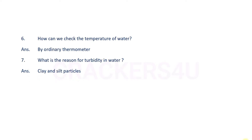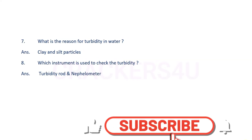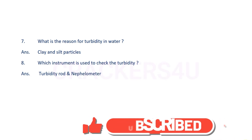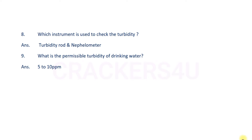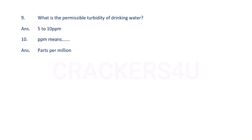What is the reason for turbidity in water? Answer: Clay and silt particles. Which instrument is used to check the turbidity? Answer: Turbidity rod and nephilometer. Question number nine: What is the permissible turbidity of drinking water? Answer: 5 to 10 ppm.